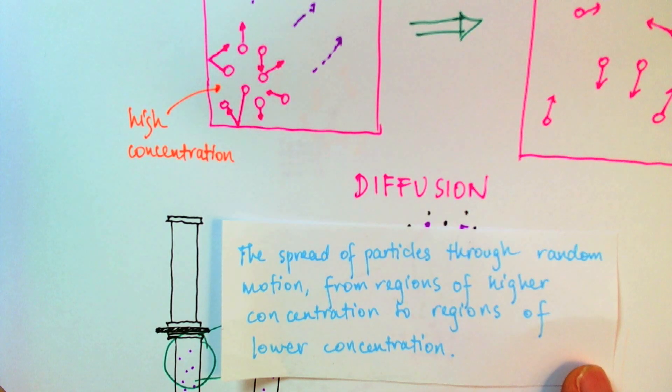In this video, we looked at the atomic theory of matter. We looked at how matter could be made up of little balls moving randomly in all directions. And we looked at diffusion as an evidence for the atomic theory of matter. In the next several videos, we'll look at more evidence for this atomic nature of matter.